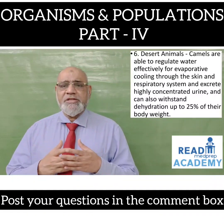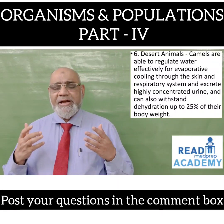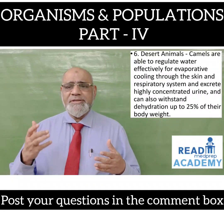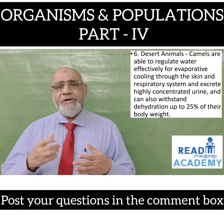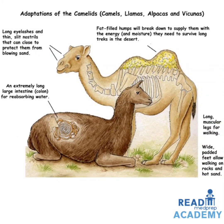Desert animals: Camels are able to regulate water effectively for evaporative cooling through skin and the respiratory system, and excrete highly concentrated urine. They can also withstand dehydration up to 25% of their body weight. Adaptations of camelids — camels, llamas, alpacas, and vicuñas — include long eyelashes and thin slit nostrils that can close to protect from blowing sand, fat-filled humps that break down to supply energy and moisture for long desert treks, an extremely long large intestine (particularly the colon) for reabsorbing water, long muscular legs for walking, and wide padded feet to allow walking on rocks and hot sand.